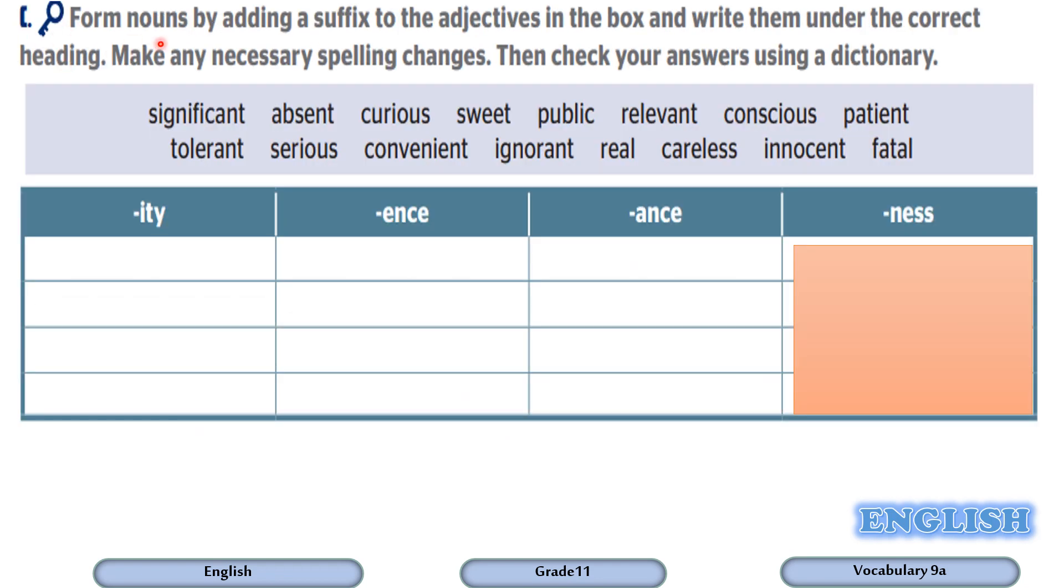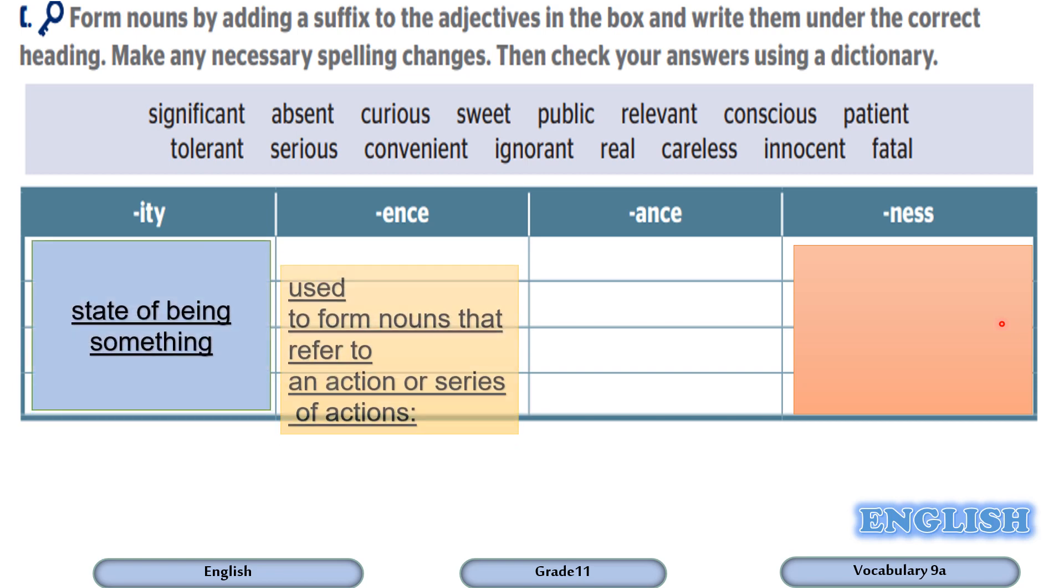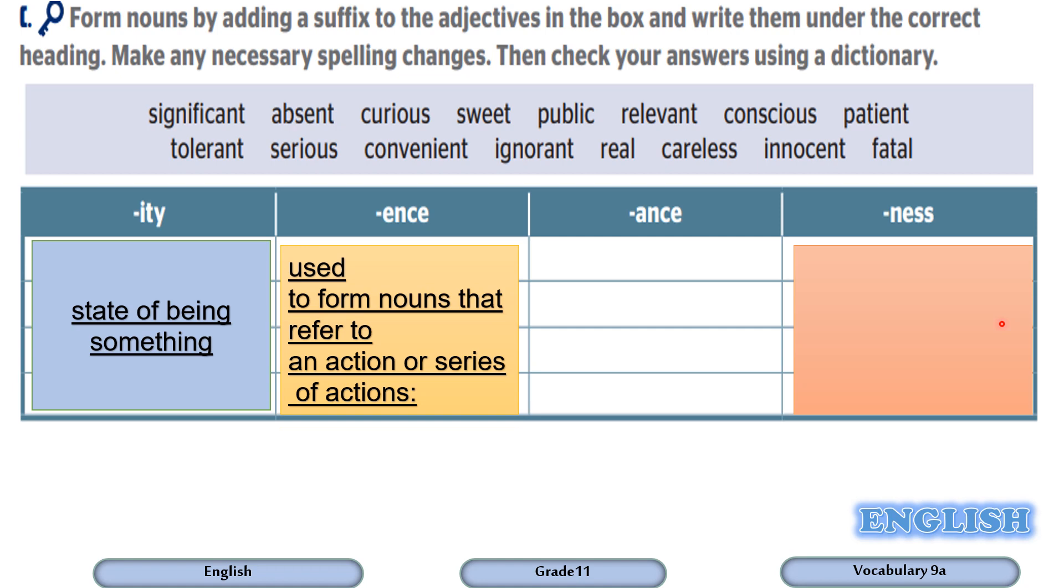Now let's practice adding suffixes to the adjectives. In activity C, we are going to form nouns by adding a suffix to the adjectives in the box and write them under the correct heading. So these are the headings. Make any necessary spelling changes, then check your answers using a dictionary. As you can see, we have a list of adjectives and we are going to form nouns by adding these suffixes. So the first suffix i-t-y refers to state of being something. The e-n-c-e to form nouns that refer to actions or series of actions. A-n-c-e, action or process, n-e-double-s refers to condition or quality.